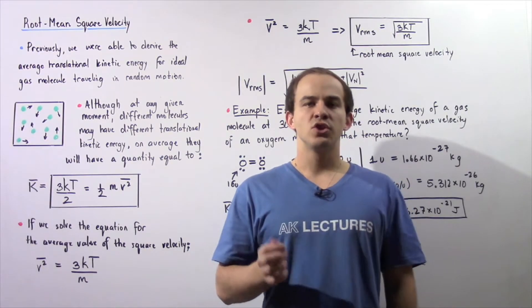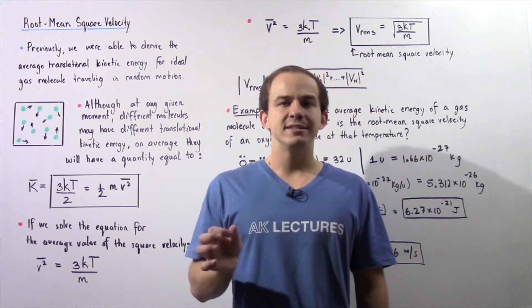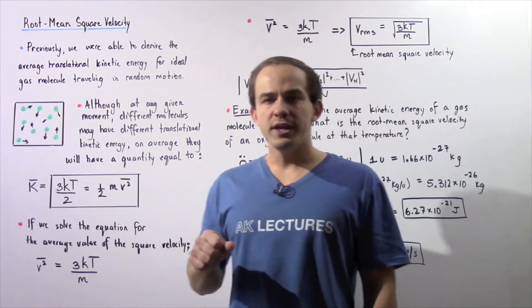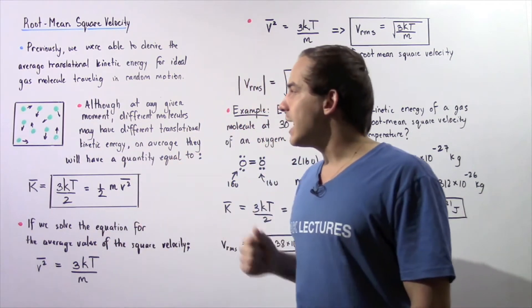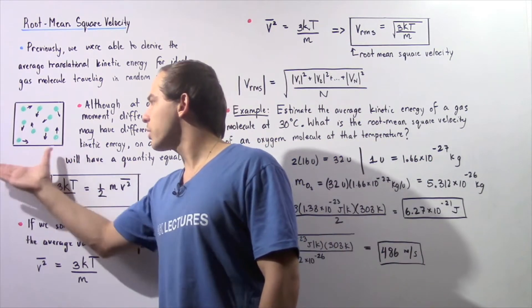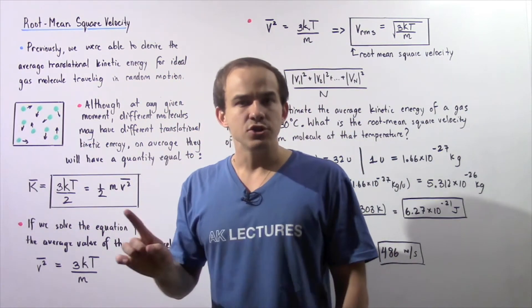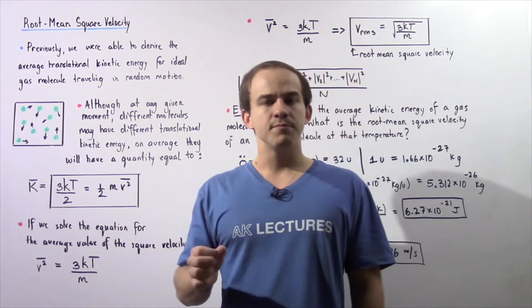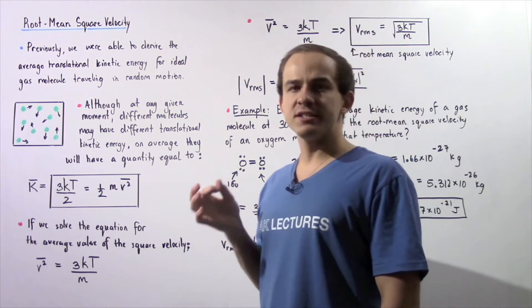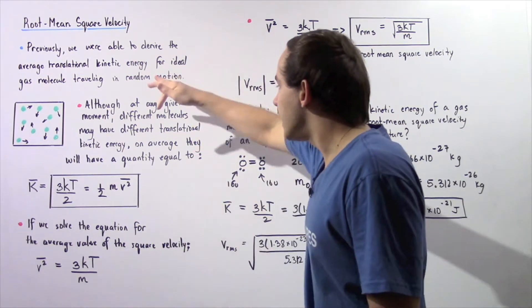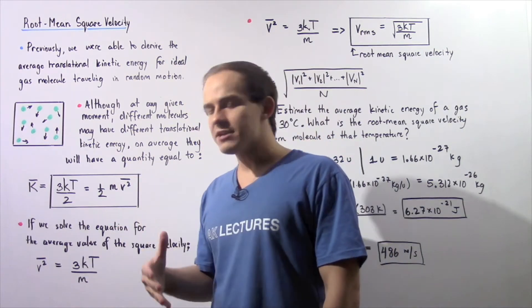In the previous lecture, we were able to derive a relationship between the average translational kinetic energy of an ideal gas molecule and the temperature. If we have a closed container with ideal gas molecules and we increase the total overall pressure of our gaseous system, the average translational kinetic energy of the molecules will also increase. At any given moment different molecules may have different translational kinetic energies, but on average they will have a quantity equal to the following equation.